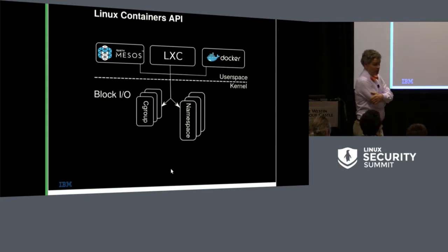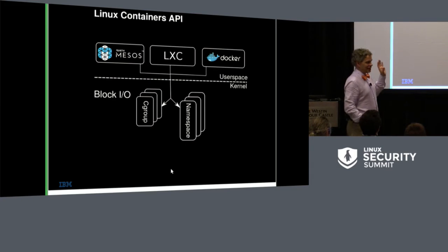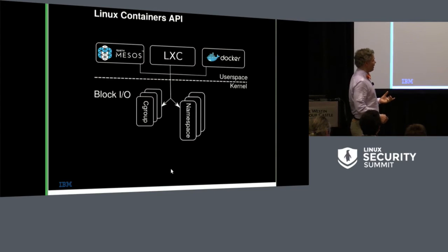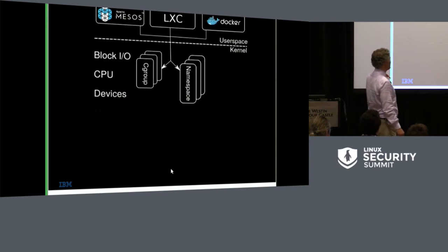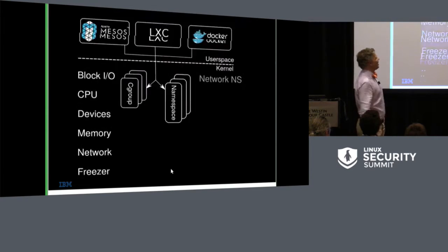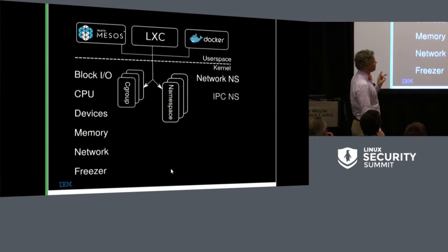For cgroups, most of the interesting container work is in namespaces right now. In the kernel, cgroups are arguing about the V1 versus V2 API — it's somewhat political rather than feature-enhancing. Namespaces are where the interesting security development is happening. I'll just briefly mention cgroups, then move on to the interesting stuff: the seven namespaces. There were six, plus the new cgroup namespace.